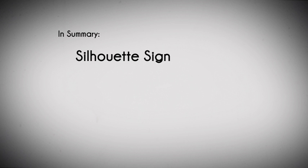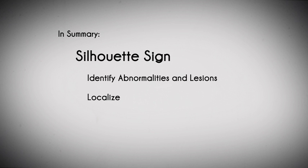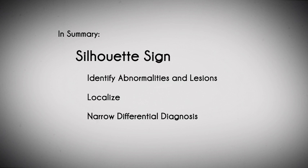In summary, the silhouette sign should help to both identify abnormalities and lesions, as well as to localize them. Once the lesion is correctly localized — for example, mediastinum versus lung parenchyma versus pleural space — the differential diagnosis can be narrowed down to a more specific subset. In this module, we were able to identify and localize two anterior mediastinal tumors and a right middle lobe pneumonia.